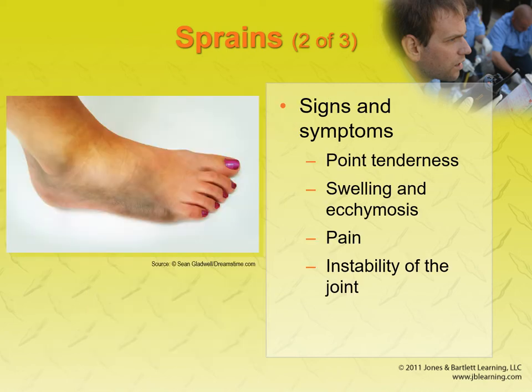The ankle is a very common one we're going to see. It's actually the anterior talofibular ligament that is the most commonly sprained ligament in the ankle — about 80% of all sprains are going to be from that one.